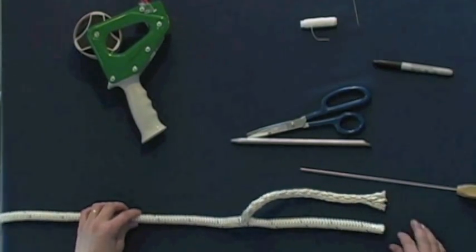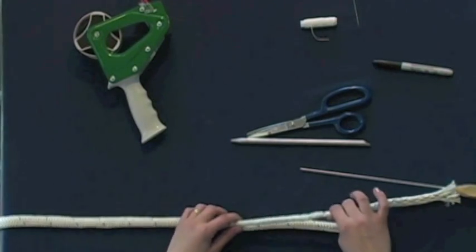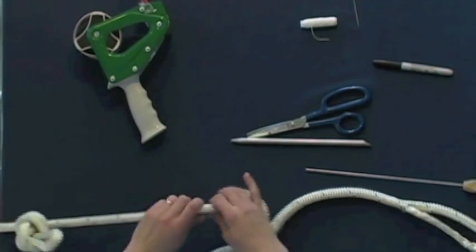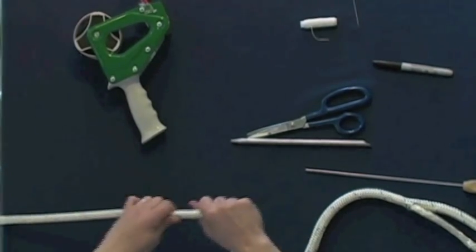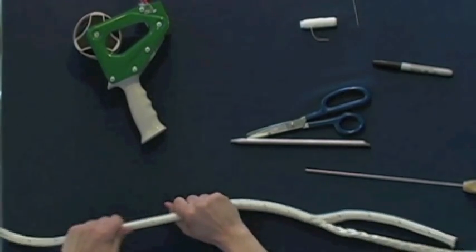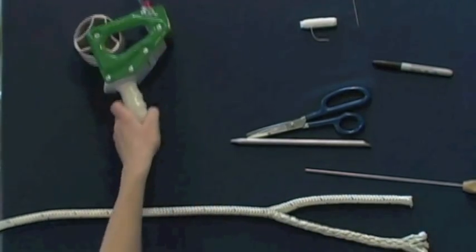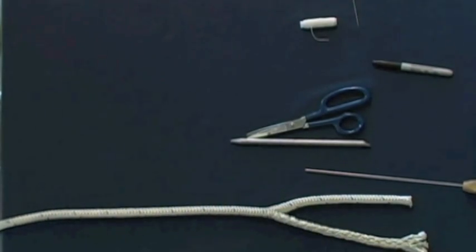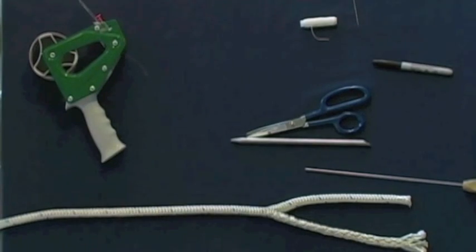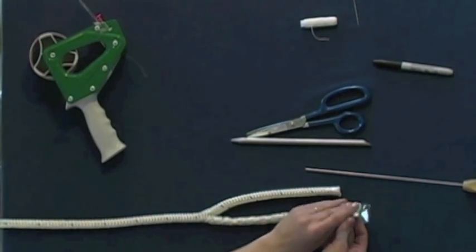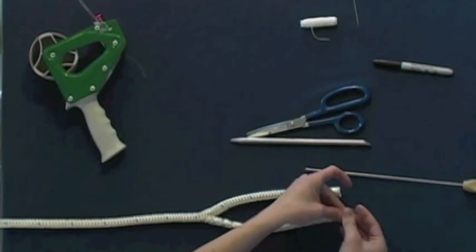Then, from your knot, you're going to milk or smooth out the cover over the core. At this point, take a piece of tape and tape the ends of the core.